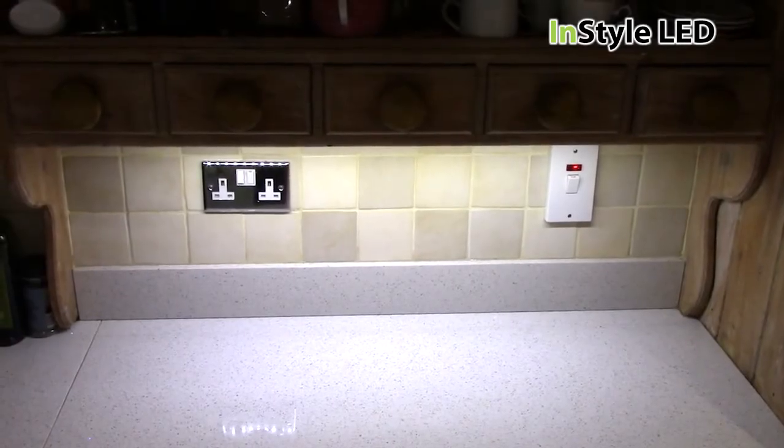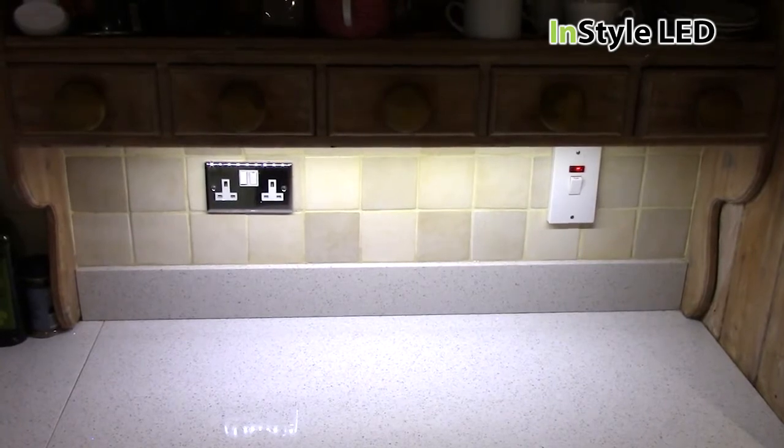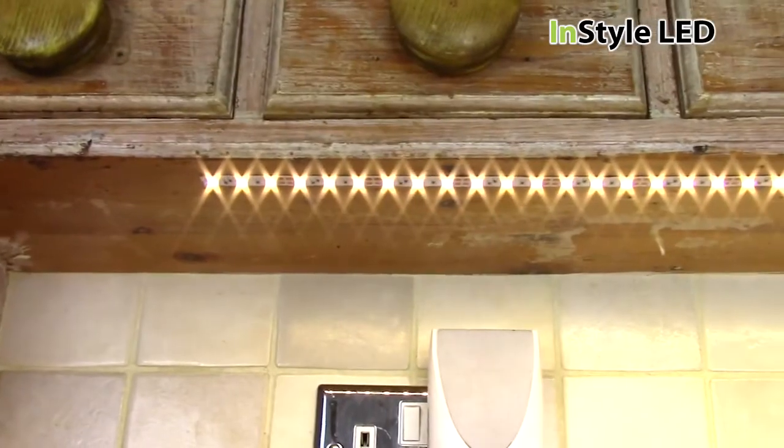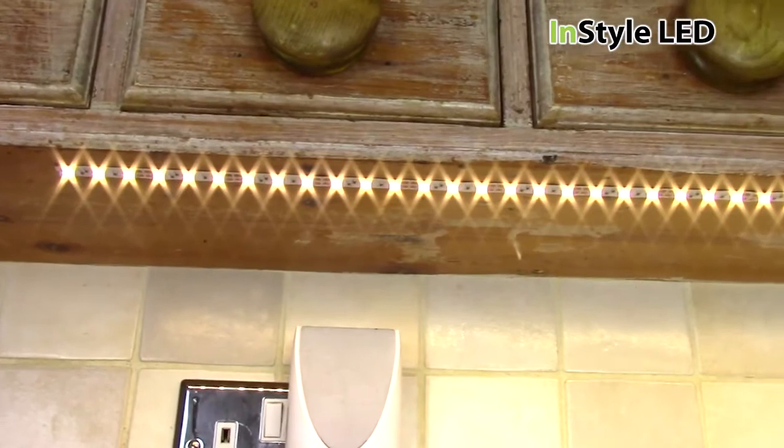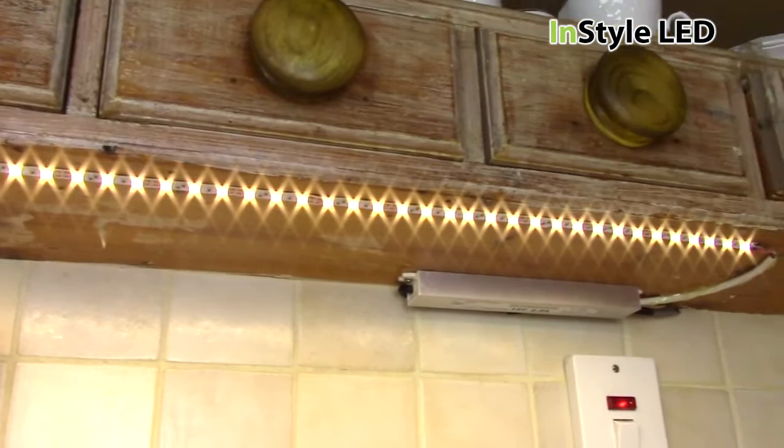How to install white LED strip lights under a kitchen cabinet. We have used the 15 watts per meter 3000 Kelvin LED tape by InStyle LED. A total of 1.2 meters was used wired to an on-off switch with a transformer.